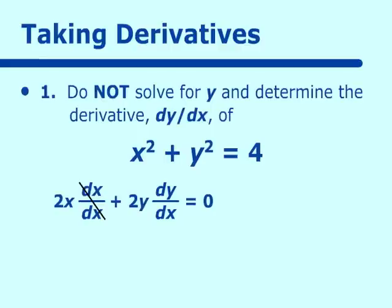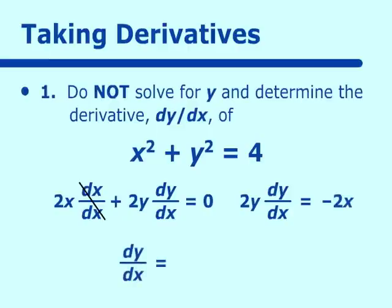Now we are going to solve for dy/dx. I put everything with dy/dx on one side, and everything without dy/dx goes on the other side — in this case, negative 2x. Then we divide to get dy/dx by itself, and we get negative 2x over 2y, which simplifies to negative x over y. This is how we take the derivative implicitly.